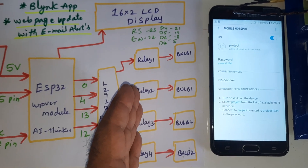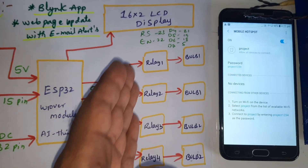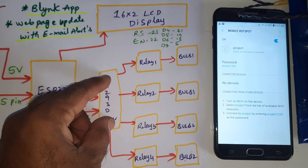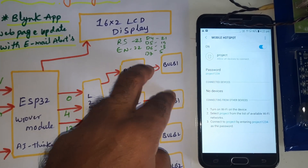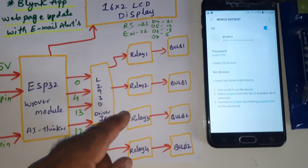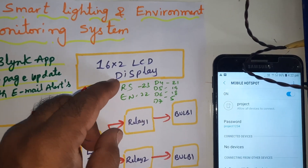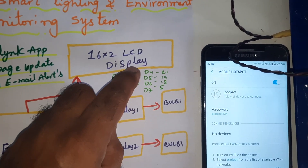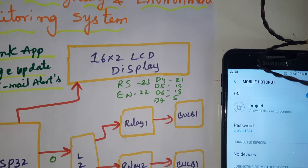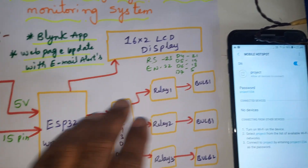Since the relay operates at 5 volts, there is a latch in between the relay and the ESP32 board. The driver IC controls relay 1 and relay 2 for bulb 1, and relay 3 and relay 4 for bulb 2. The 16x2 LCD display is connected to RS, Enable, D4, D5, D6, D7 on GPIO pins 23, 22, 21, 19, 18, and 5.